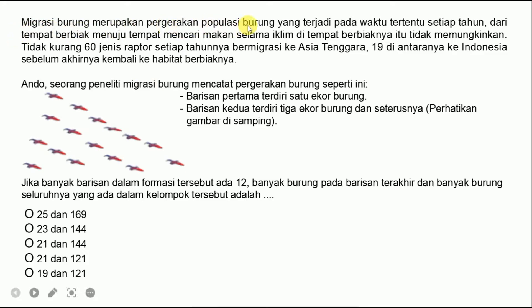Migrasi burung merupakan pergerakan populasi burung yang terjadi pada waktu tertentu setiap tahun, dari tempat berbiak menuju tempat mencari makan selama iklim di tempat berbiaknya tidak memungkinkan. Tidak kurang 60 jenis raptor setiap tahunnya bermigrasi ke Asia Tenggara, 19 di antaranya ke Indonesia sebelum akhirnya kembali ke habitat berbiaknya. Ando, seorang peneliti migrasi burung, mencatat pergerakan burung seperti ini.